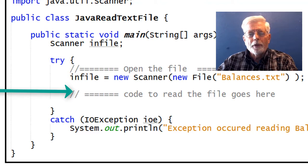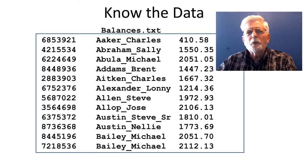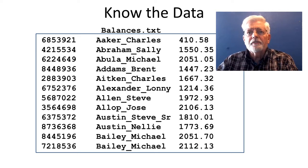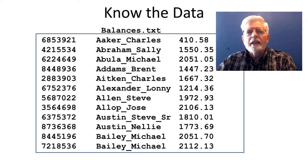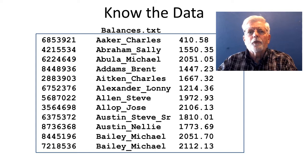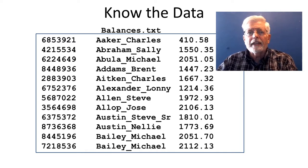Once the file has been opened, you no longer reference the file by its name on the disk. You should be able to read from a text file line by line without any problem. However, if you plan to read the data and treat each line as a record containing several separate fields, it is very important to know how the data is formatted. The balances.txt file has records with an integer for account number, a string for customer name, and a floating point value for balance. The account number and balance fields are ASCII characters converted into integers and doubles when calling nextInt() and nextDouble().